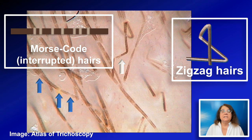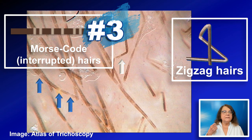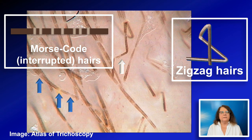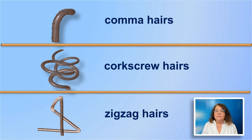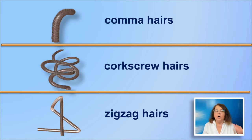Two more typical trichoscopy features of tinea capitis: number three are the Morse code hairs or interrupted hairs, marked blue at the bottom of this image, showing typical interruptions along the hair shaft. Feature number four are the zigzag hairs — hairs which bend at a very sharp angle. So the four most typical trichoscopy features of tinea capitis are the comma hairs, the corkscrew hairs, the Morse code hairs, and the zigzag hairs.